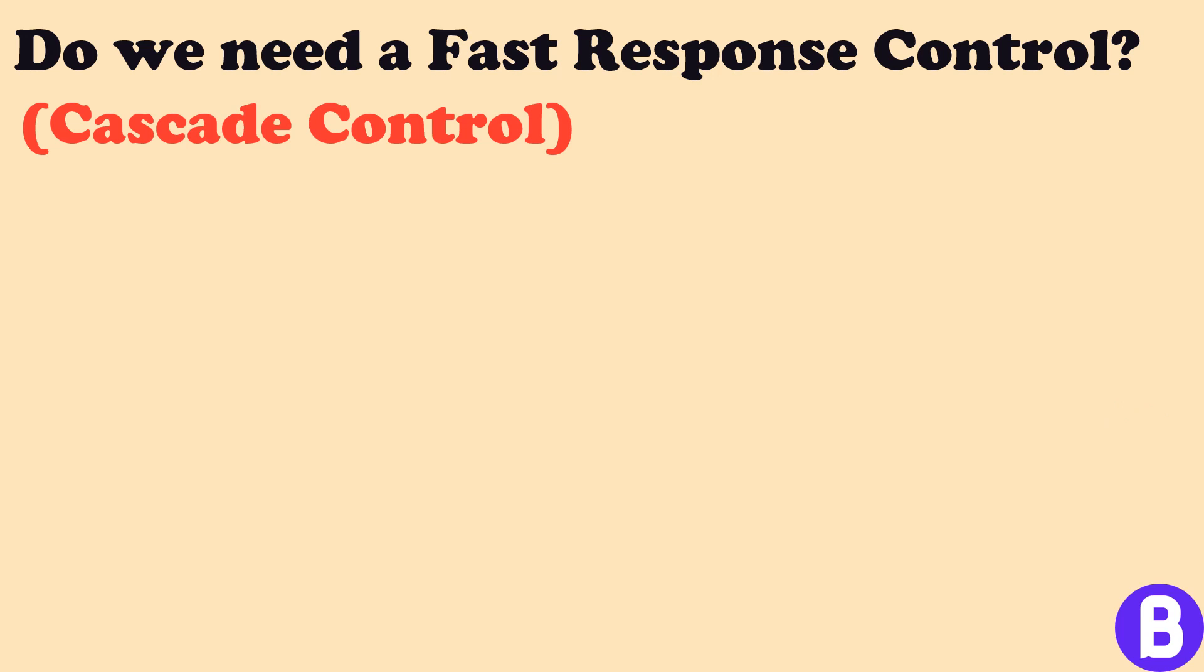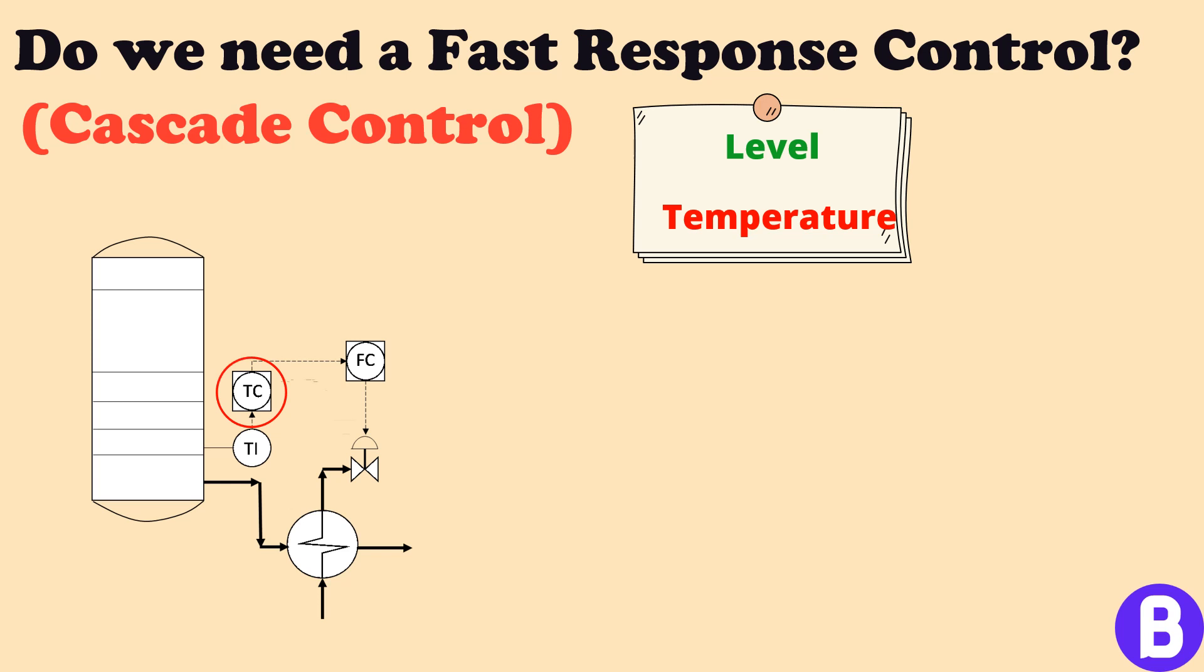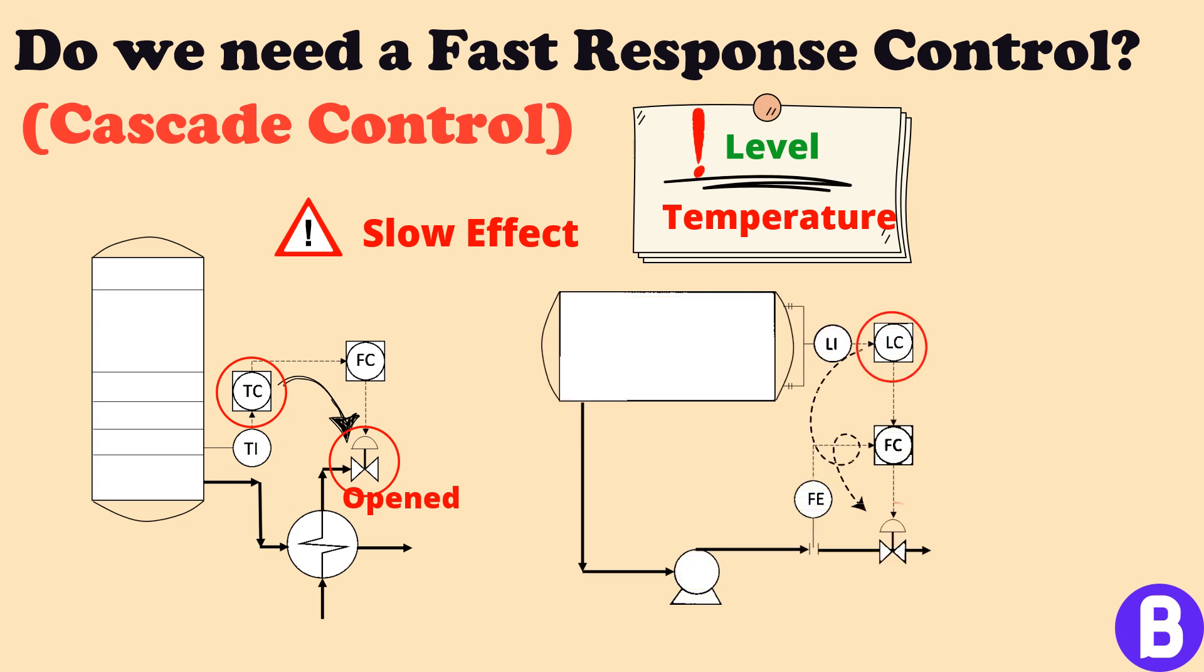The dynamics of a control loop depend on the variable to be controlled. Some variables, such as level or temperature have a slow response. So if a temperature controller sends a signal to the coolant valve to open, the effect of the valve opening on temperature is usually slower than the case if it was a flow controller. This is the same case of level control as well. One of the control configurations that are used to accelerate the response of temperature and level control loops is the cascade control.